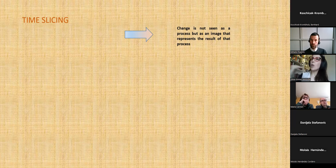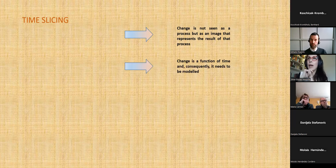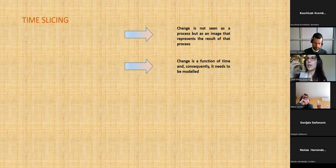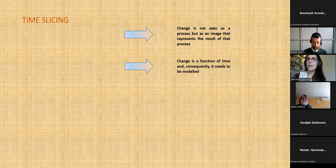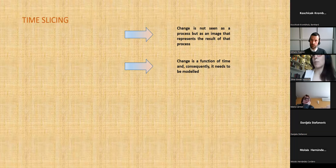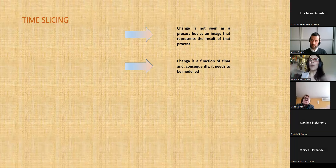Time slicing can be a good alternative but for me it was not precise enough, because I also want to incorporate not just the change of house types but also what colleagues are doing with tombs, pottery, and migration materials. Time slicing is too static a picture. Change is not seen as a process — it is simply one image and then another image on top of it. Change is a function of time and needs to be modeled.